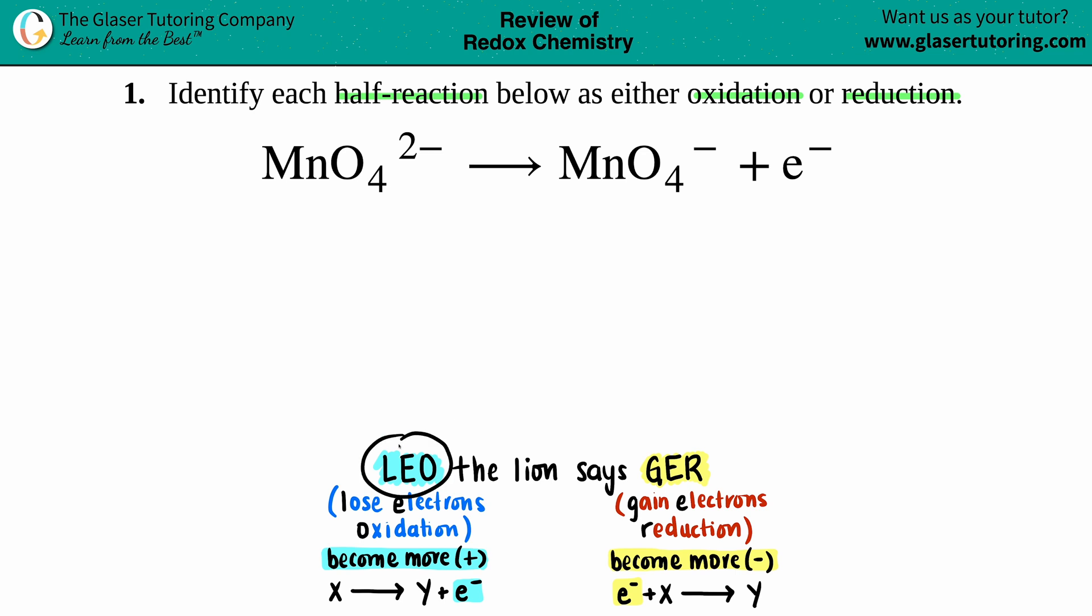So for LEO, that stands for losing electrons is always oxidation. If you lose electrons, that substance is becoming oxidized or undergoing oxidation. On the flip side, if you gain electrons, that's reduction. So gain electrons, reduction, or is being reduced.